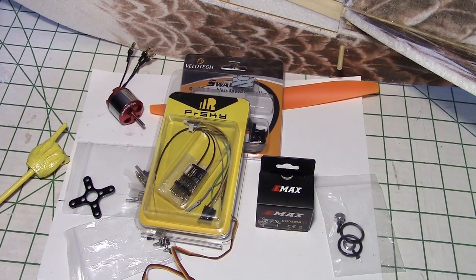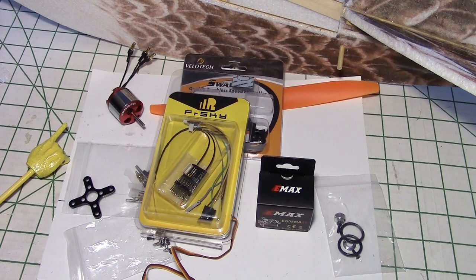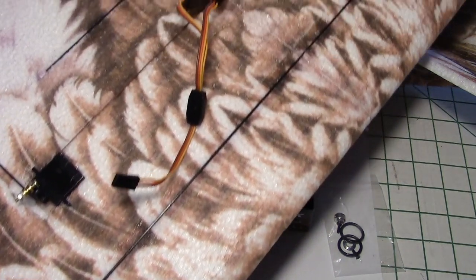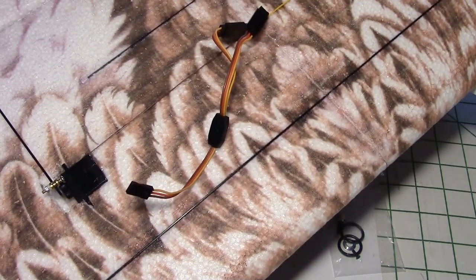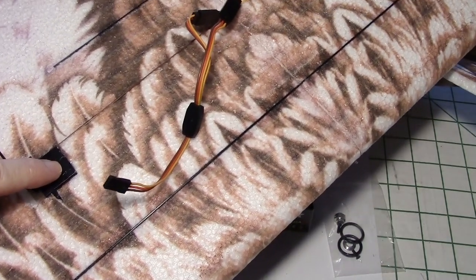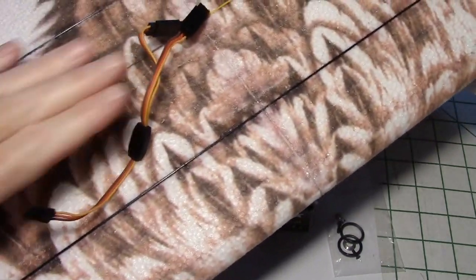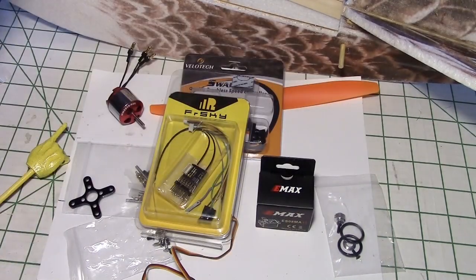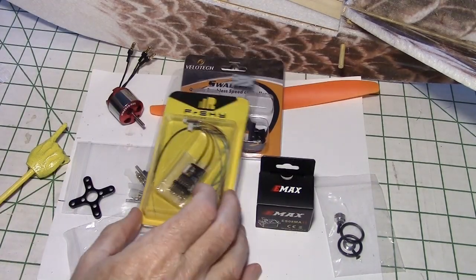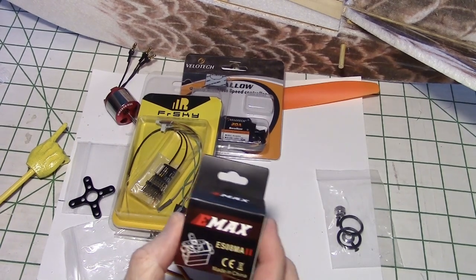In case you missed my previous two videos on building the wing and building the fuselage, you can take a look at those and I'll put links underneath this video. But speaking of the wing, here is the wing here and on the wing I did use the stock servos for the aileron. So I used stock servos on the wing, but on the fuselage I'm going to be using the Emax.